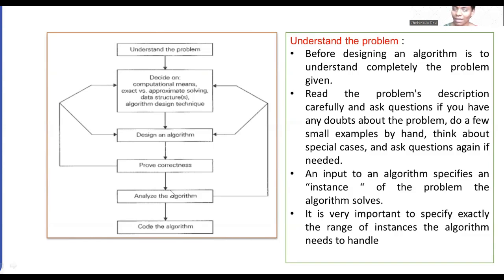You can look at any previous existing solutions for the problem, analyze them, and check for all cases and queries. Discuss with the client to get a clear picture of the problem. Then you have to decide what kind of input your algorithm will take and what the expected output is. Very importantly, you must know exactly the range of instances that your algorithm needs to handle — an algorithm can work only within that particular scope.